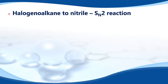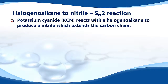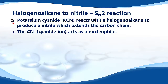Halogeno alkane to nitrile, SN2 reaction. Potassium cyanide, KCN, reacts with a halogeno alkane to produce a nitrile which extends the carbon chain. The CN negative, or cyanide ion, acts as a nucleophile.